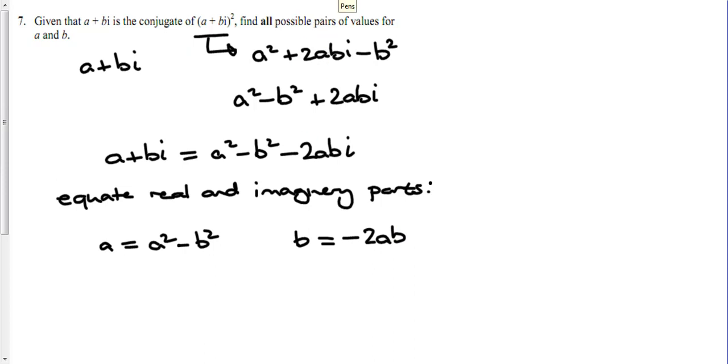So actually what you need to do is move everything onto one side, so you end up with b plus 2ab equals 0. That means we can factorize, taking a factor of b out and leaving 1 plus 2a in the brackets. And then we've got two possible solutions.